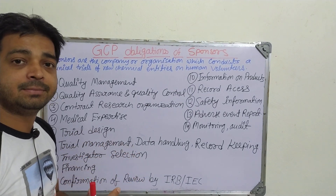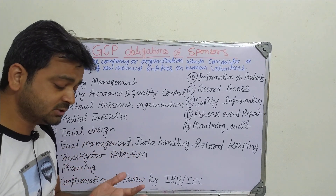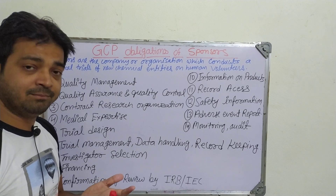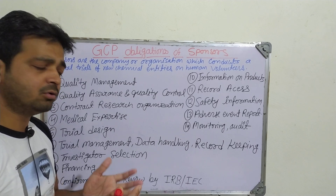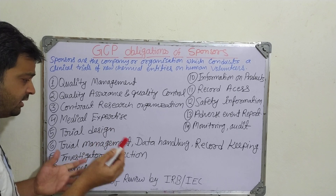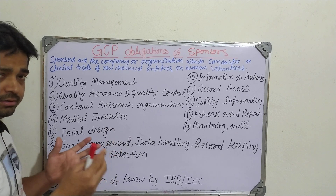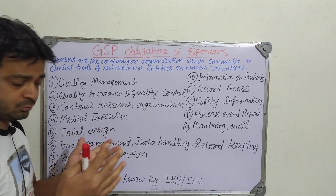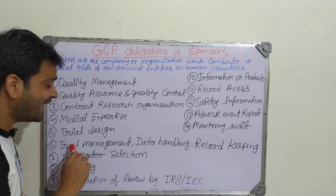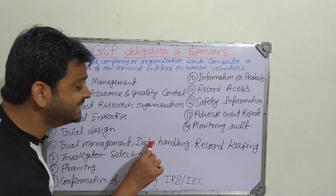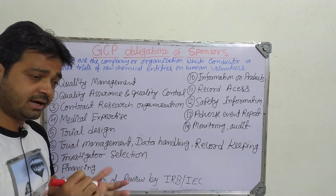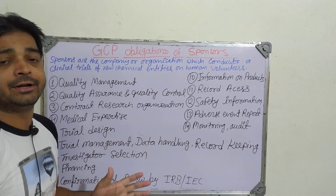Trial design is another obligation. In Phase 1, considerations include the number of patients, age group, gender — male or female — and all related factors. There are different protocols and procedures for clinical trial design, including randomization design.